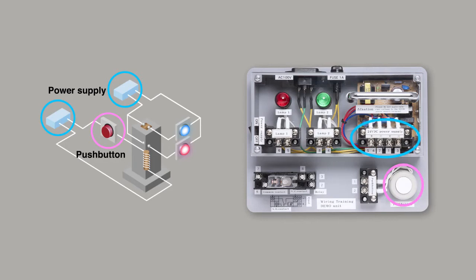The wiring training demo unit has a power supply, push button, blue light, red light, and relay, just like the electrical schematic diagram.